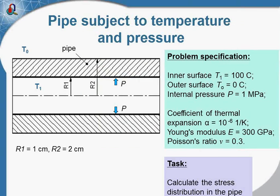There are two ways you can simulate this case. You can run the axis-symmetric model and simulate the upper half of the cross-section, or you can look from the side at the pipe and simulate the plane parallel case. I will show you both.